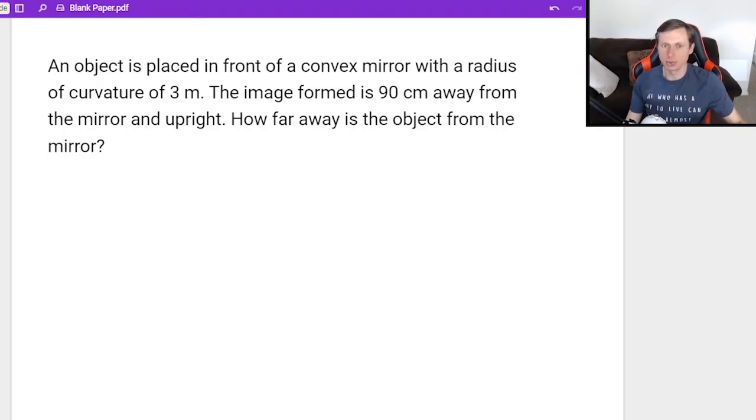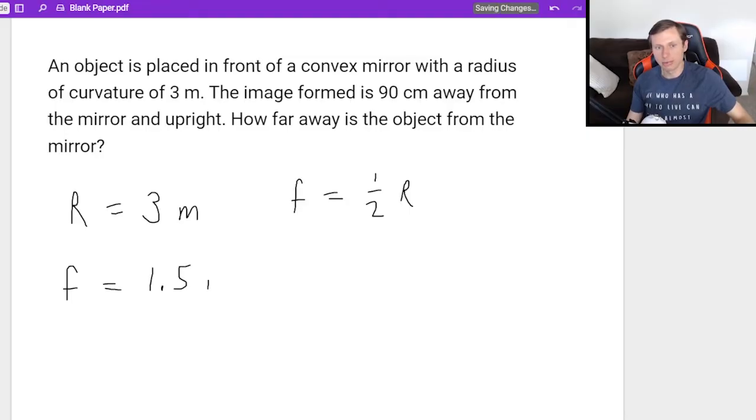So the first thing I'm going to do is write down all my knowns. This time I give us the radius of curvature, three meters, which remember, if we want to find the focal length, that's just one half times the radius of curvature. So the focal length is going to be three divided by two, which is 1.5 meters.